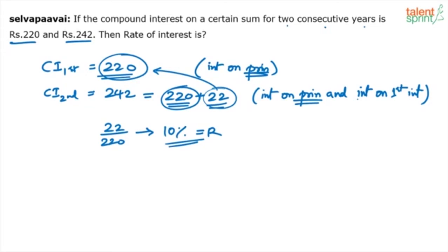But my question is: will it still be 10% even if the two consecutive years are not the first and second year? Suppose it is the third and fourth year, or seventh and eighth year, or second and third year — would you still say the answer is 10%? No, you cannot say the answer is 10%. I'll tell you why.